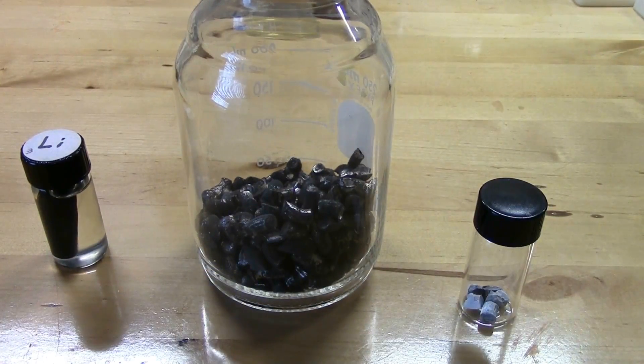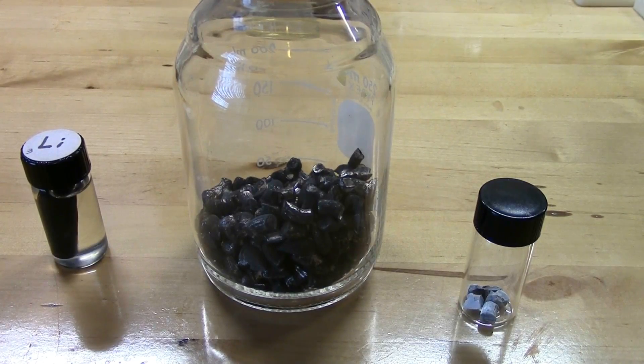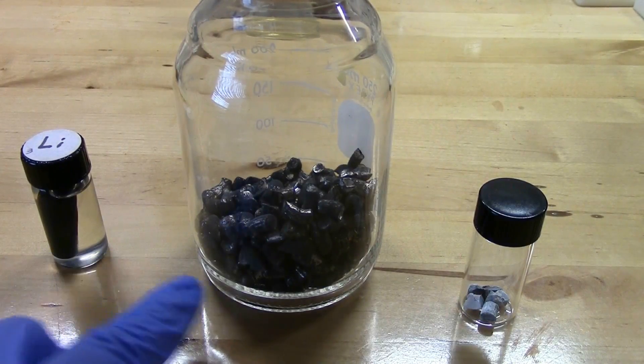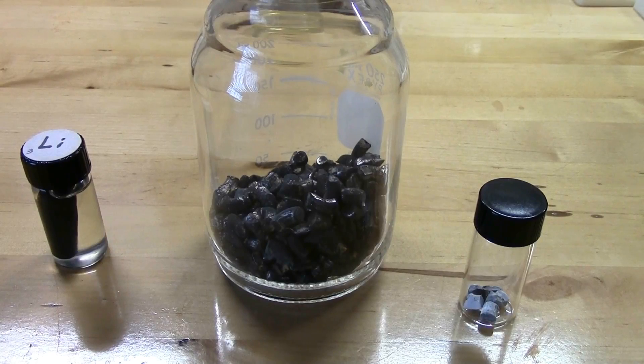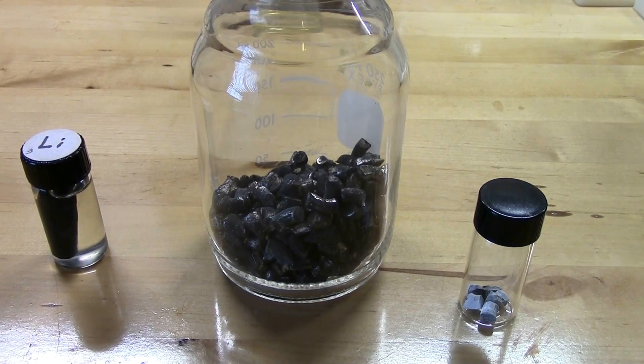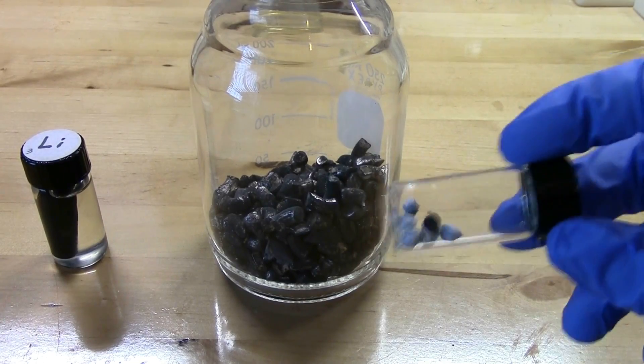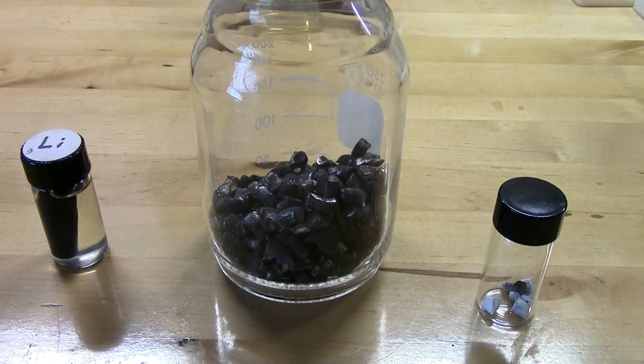Lithium is the only metal that reacts with nitrogen at standard conditions. This black material is actually lithium nitride, so it combines with nitrogen straight out of the air to form a compound which is really pretty amazing. Then this white coating here is lithium hydroxide or lithium carbonate.